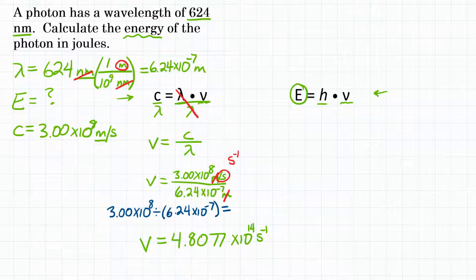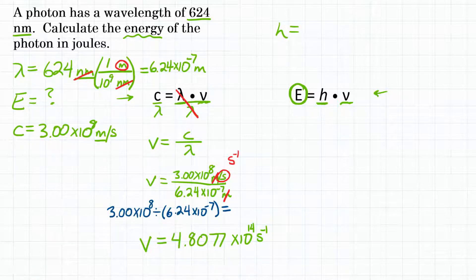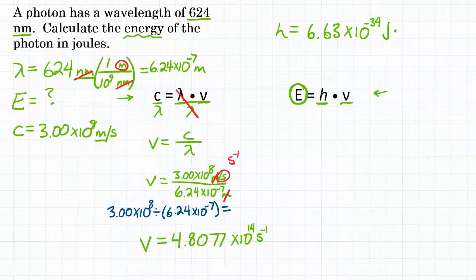That is our frequency. We can now use it in our second equation where E energy equals H, Planck's constant, times V frequency. We need Planck's constant — it is a constant with a known value of 6.63 times 10 to the negative 34th, with units of joules times seconds. Let's plug that into our equation with frequency.